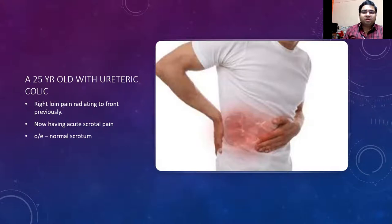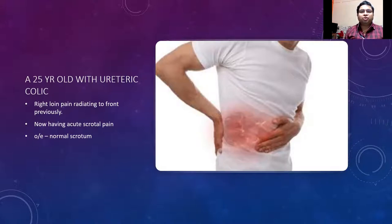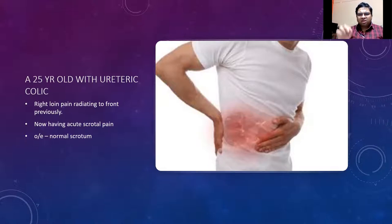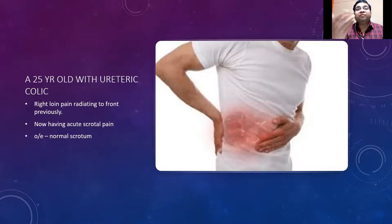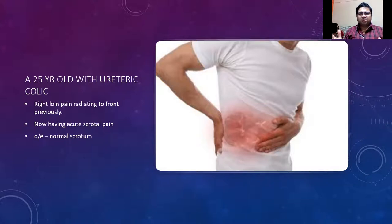First of all, you have to examine the scrotum, because the first important diagnosis to entertain is acute testicular torsion — a young individual with scrotal pain. On examination the scrotum is swollen, there's a reddish hue on the skin. The patient writhes in pain. There's the Prehn's sign: you try to elevate the testes and the patient tries to slap you because you're aggravating the pain. We can't do Prehn's sign if the patient is already in agony.